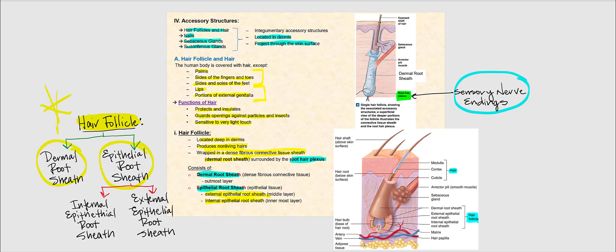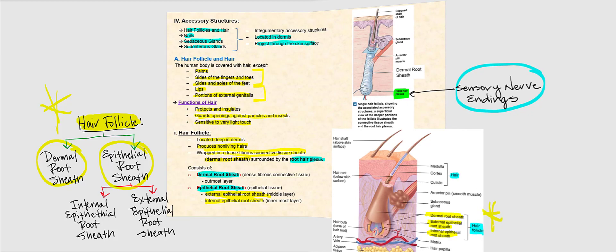Looking at the diagram to the right, here is the hair follicle. The dermal root sheath is the dense fibrous connective tissue outermost layer, followed by the epithelial root sheath, which consists of the middle layer — the external epithelial root sheath — and the innermost layer, the internal epithelial root sheath. This is essentially what produces non-living hair.